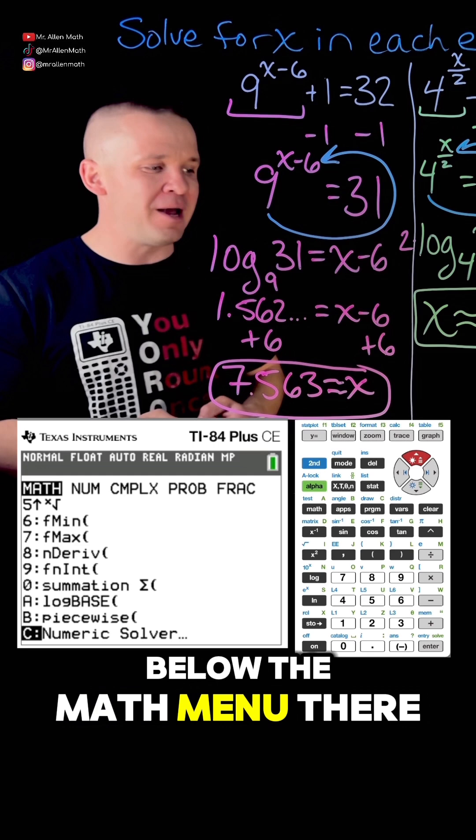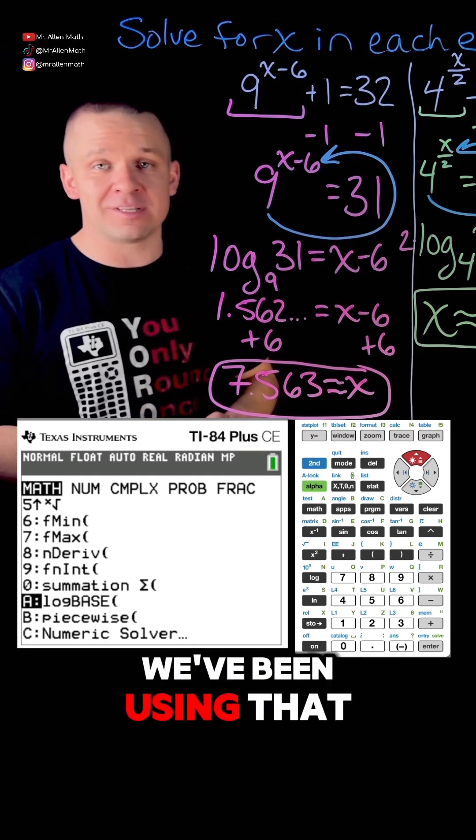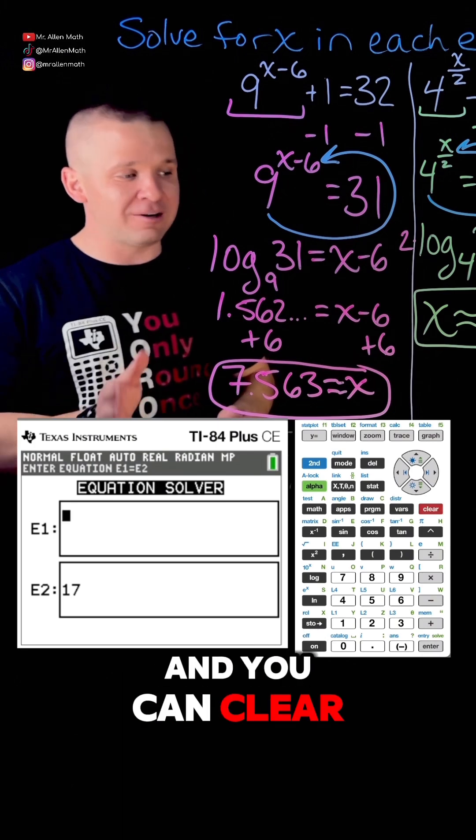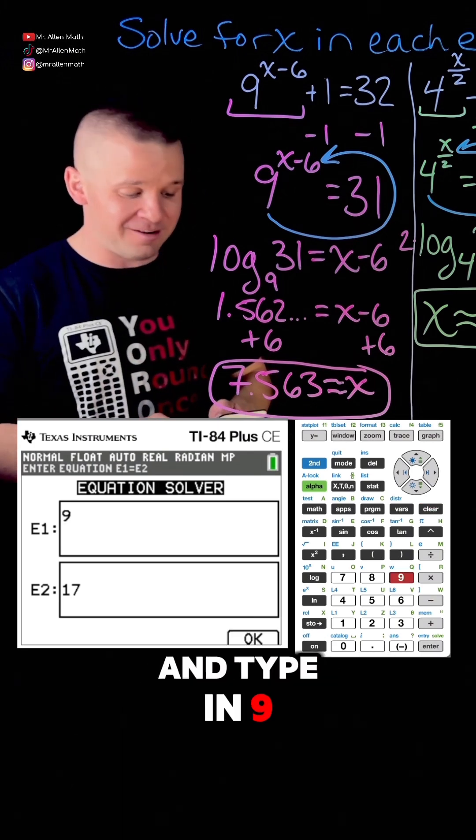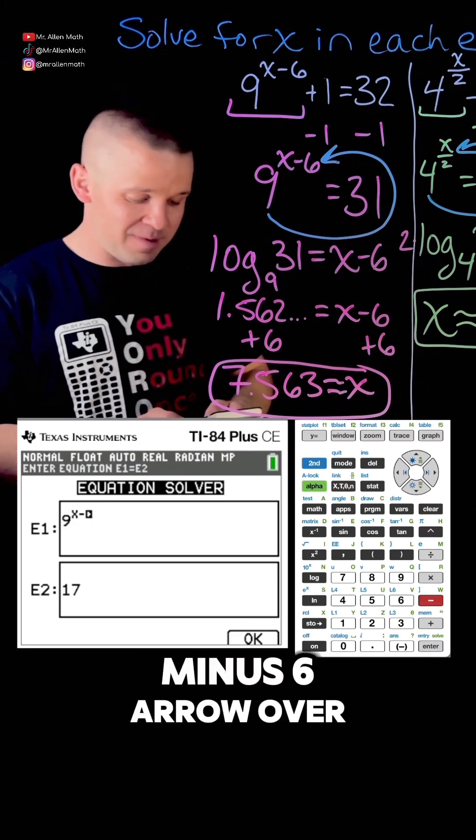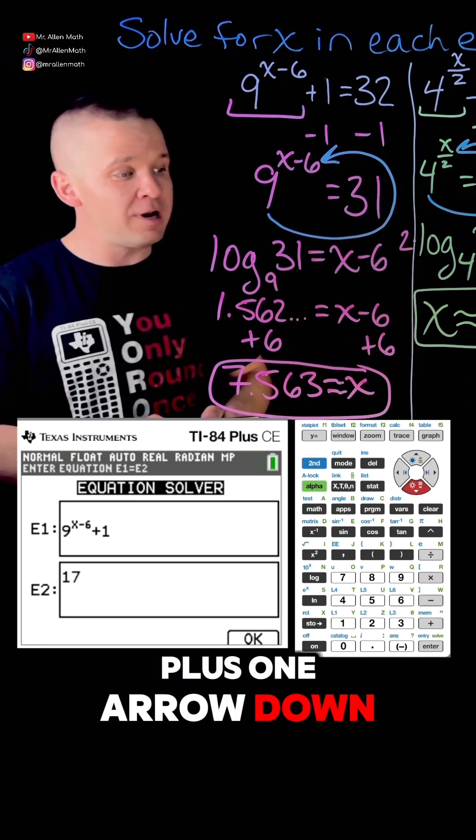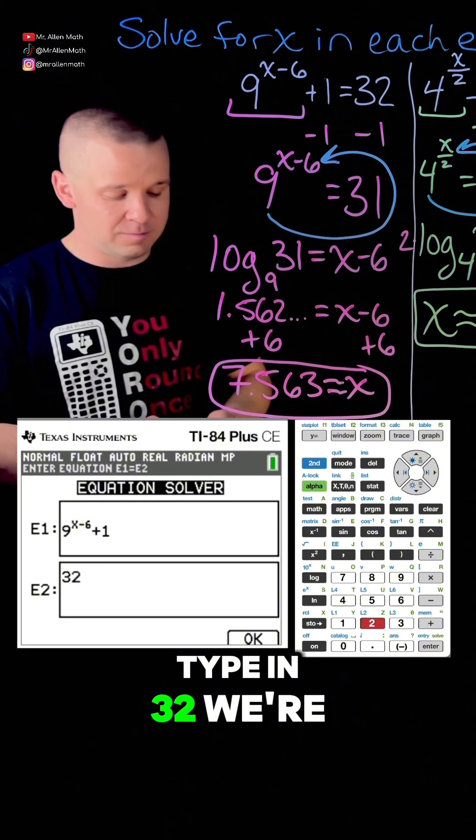You can actually see log base - we've been using that one, remember option A. Anyways, hit enter on numeric solver and you can clear out whatever's there and type in 9 raised to the x minus 6, arrow over, plus 1, arrow down, type in 32. We're going to